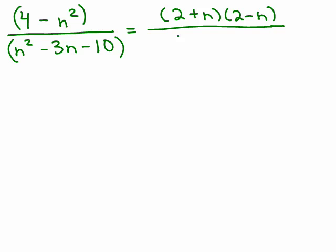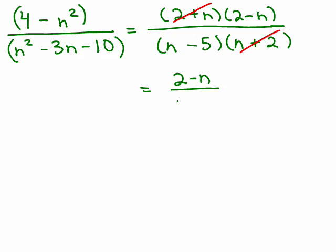And now in the denominator, we have a quadratic, a trinomial. So it's got to be an N and an N. Then we want factors of 10 that have a difference of three. That's going to be 5 and 2. It's going to have to be a minus 5 and a plus 2. So what's going to happen here? I have a 2 plus N. Is there a 2 plus N in the denominator? Well, there's an N plus 2, and those are exactly the same. So we can cancel.